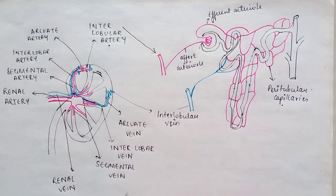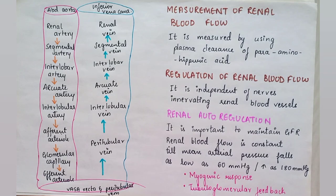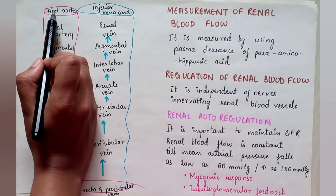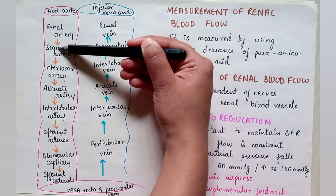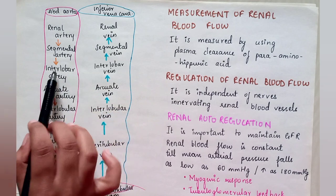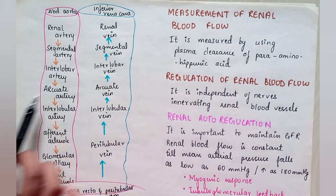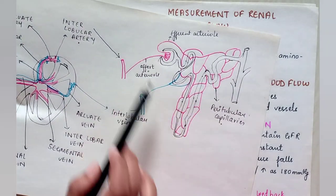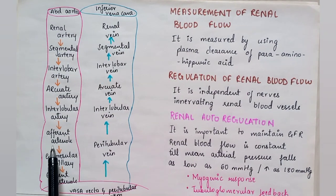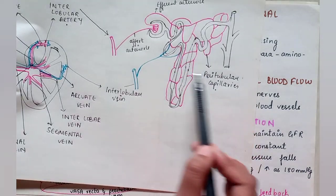Let's understand these arteries in the form of a schematic representation. The oxygenated blood in the arteries mainly comes from the abdominal aorta through the renal artery, which further goes to the segmental artery, then to the interlobar artery, the arcuate artery (the parallel one), then to the interlobular artery, which goes to the nephrons. This gives rise to the afferent arteriole, which passes through the glomerular capillaries and comes back to the efferent arteriole.